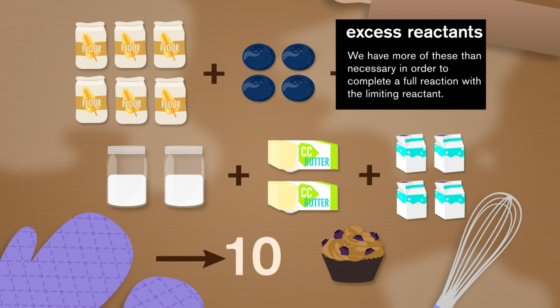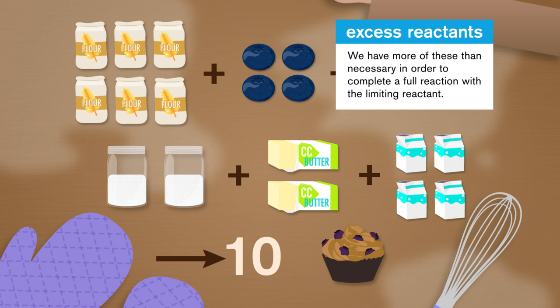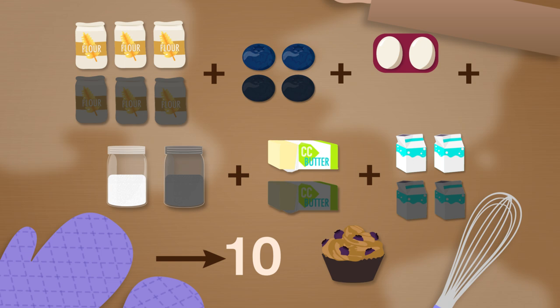All the other ingredients here would then be excess reactants. This means we have more of these than necessary in order to complete a full reaction with the limiting reactant. To put this another way, we'll have a lot of leftover ingredients we can't use because there aren't enough eggs.